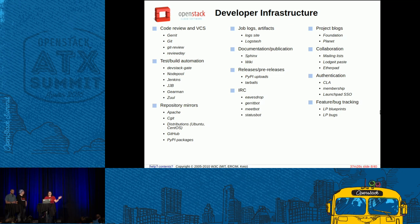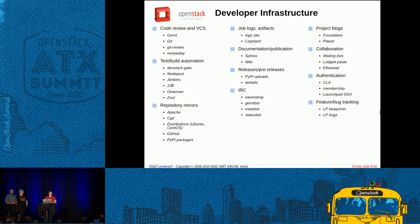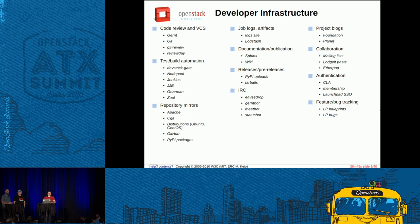The developer infrastructure for OpenStack has all these components. You interface with a code review system using git-review to submit your changes, and then review through the web interface. We'll dig really deep into the test and build automation. We also host a bunch of repository mirrors for various things we need to test against. We have massive log servers to host both static and searchable logs, and we run all the other things developers need — bots on chat, mailing lists, paste bin, ether pads — things that developers use for collaboration.